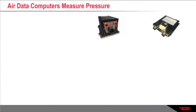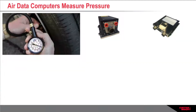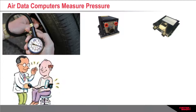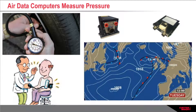Air data computers use pressure measurement to calculate the velocity and altitude of an aircraft. More familiar forms of pressure measurement are determining the pressure in a tyre, taking someone's blood pressure, and the atmospheric pressure shown on weather charts.